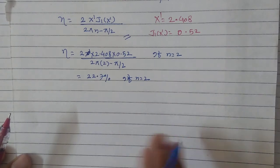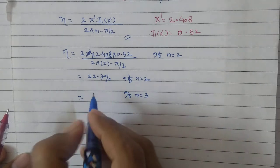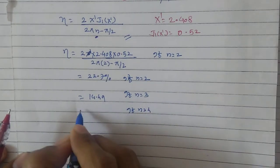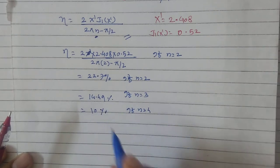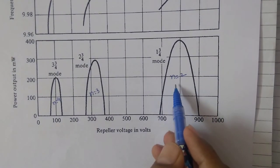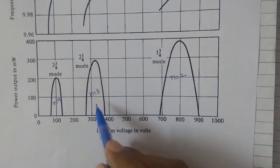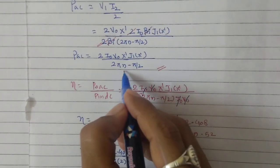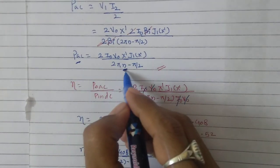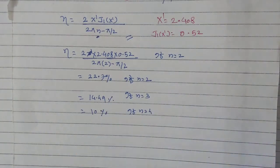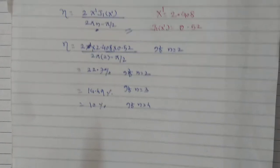If n=3, efficiency drops to 14.49%, and if n=4, it drops to approximately 10%. It is now clear that if we increase the mode number N from 2 to 3 to 4, output power reduces and efficiency also reduces. So there is an inverse relation between output AC power and the mode number, and efficiency also has an inverse relation with the mode number.